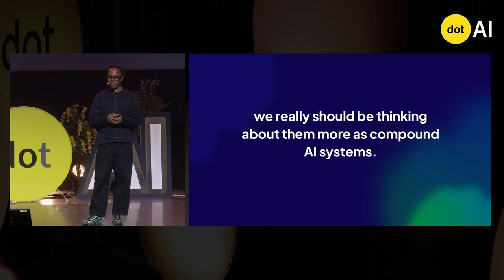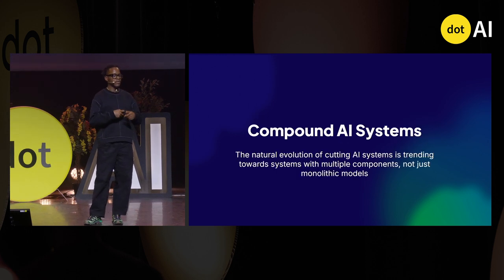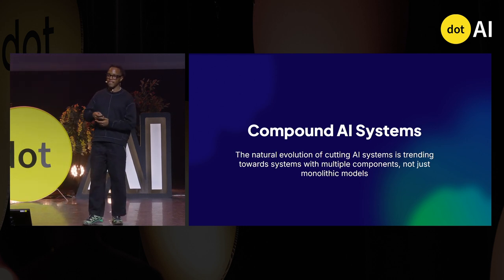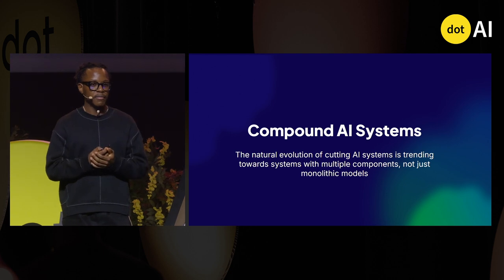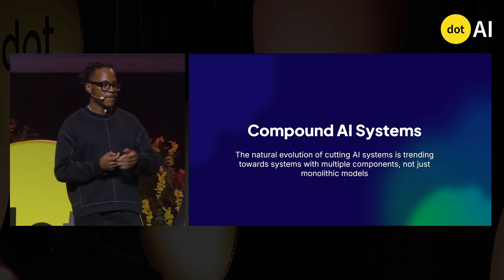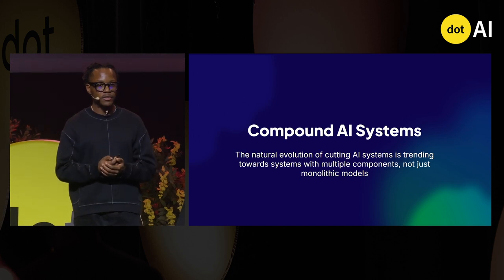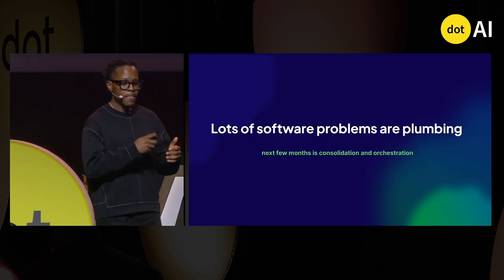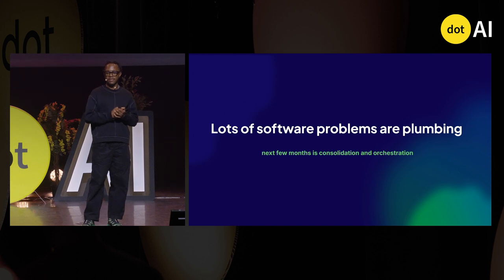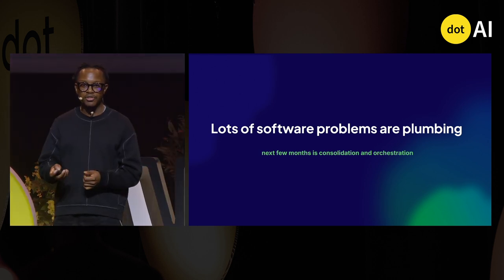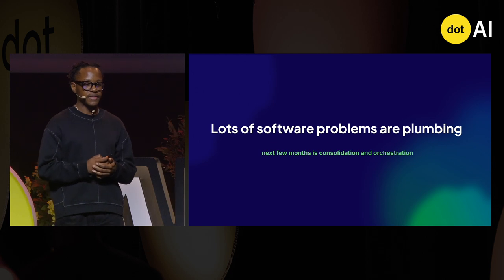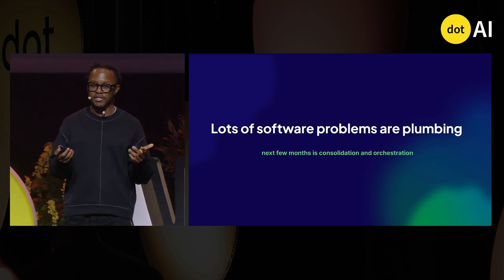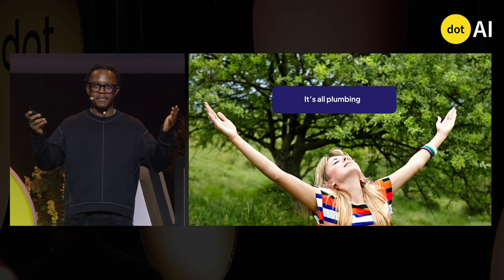The way I want to present this is the idea of compound AI systems, which a lot of smart people noticed — singular foundational models can only take us so far. We're better off looking at AI systems as a collection of multiple components that work together to solve the problems you're looking to solve. A lot of software problems for developers are essentially plumbing. We've seen talks about orchestration and constraints, and the big theme for the next few months will be consolidation and orchestration — because at the end of the day, it's all plumbing.